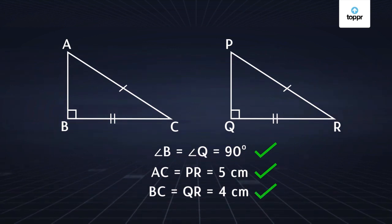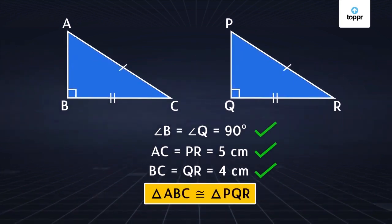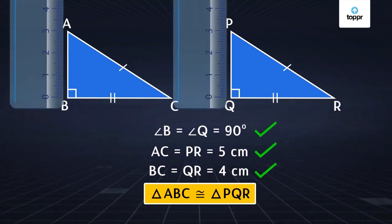So we can say that by the RHS test of congruence, triangle ABC is congruent to triangle PQR. You can verify this by measuring the length of AB and PQ as shown here.